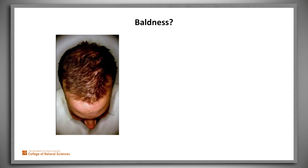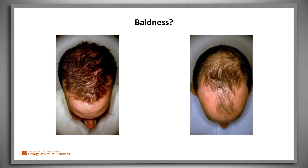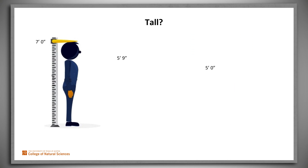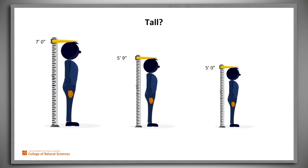And heap is not alone. Someone with 200,000 hairs on their head is definitely not bald. Someone with 10 hairs is bald. What about someone with 20,000? Bald too is vague. A man whose height is seven feet is tall. A five-foot man isn't tall. What about a five-nine man? Again, tall is vague.